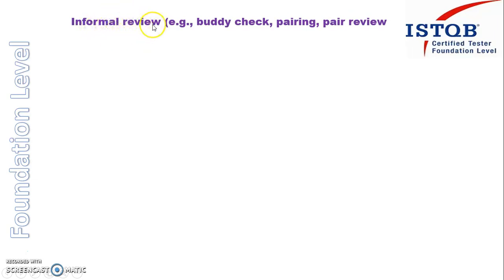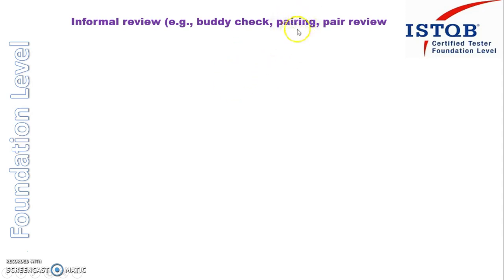Informal review is actually done by buddies — someone who is working with you. You just ask them to check your document, whether it is correct or not, or find out if there is any mistake, and you will fix it when they find it out for you. So it is done in pairing — two people — and it is also called a pair review, or peer review. Just remember this.